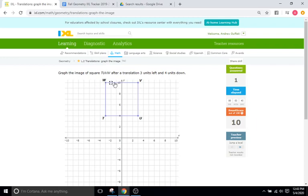Okay graph the image of the square after translating three units to the left and four units down. Okay we'll go with V first. We'll go one two three to the left and then one two three four down. Click.